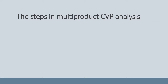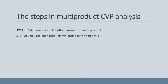Now that we understand when to apply Multiproduct CVP Analysis and the key assumptions, let us consider the five steps. Step 1 is to calculate the contribution per unit for each product — contribution is calculated as the selling price less all variable costs, including production and non-production variable costs. Step 2 is to calculate the sales mix, which can be done as either a ratio or a proportion.